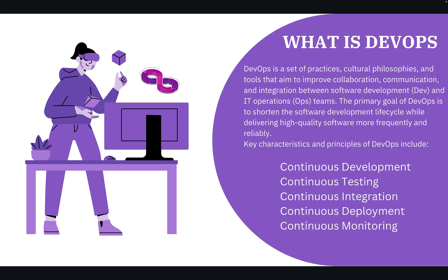We already discussed the DevOps part. DevOps is basically a software development approach which involves continuous development, continuous testing, continuous integration, continuous deployment, and continuous monitoring. These phases are followed throughout the development life cycle. The very first phase of DevOps is continuous development.